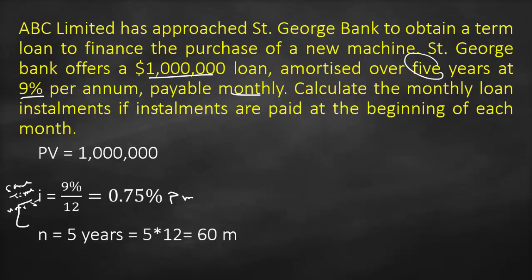In the question, they said that we need to calculate installments — we need to calculate C. They said that installments will be paid at the beginning of each month. Therefore, this is an example of annuity due.